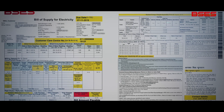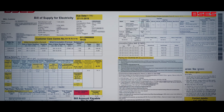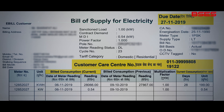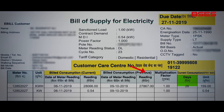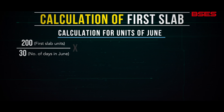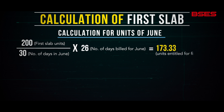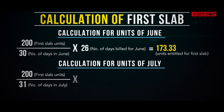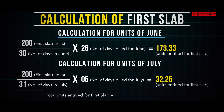In your BSES monthly electricity bill, the calculation of a slab is done based on the actual number of days in the bill month. For example, if the billing period is 31 days and covers 26 days of June and five days of July respectively, with a total consumption of 448 units, then this is how the slab-wise calculation will take place.